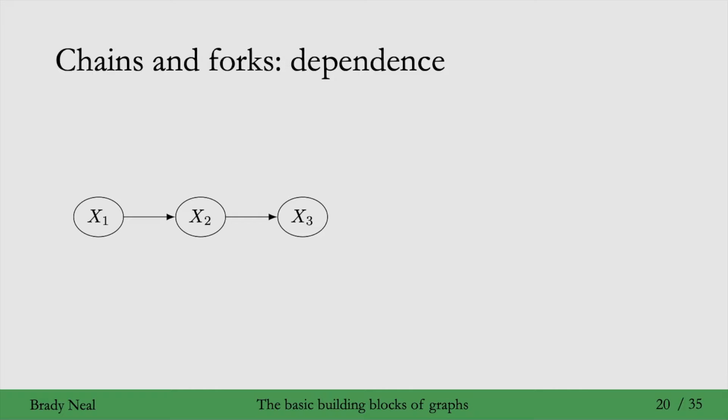x1 and x3 are also dependent, usually, and we'll depict this with this sort of flow of association, or flow of information. And it flows from x1 through x2 to x3, or the other way around, from x3 through x2 to x1. It's symmetric. And a reminder that when I say association, I just mean statistical dependence.